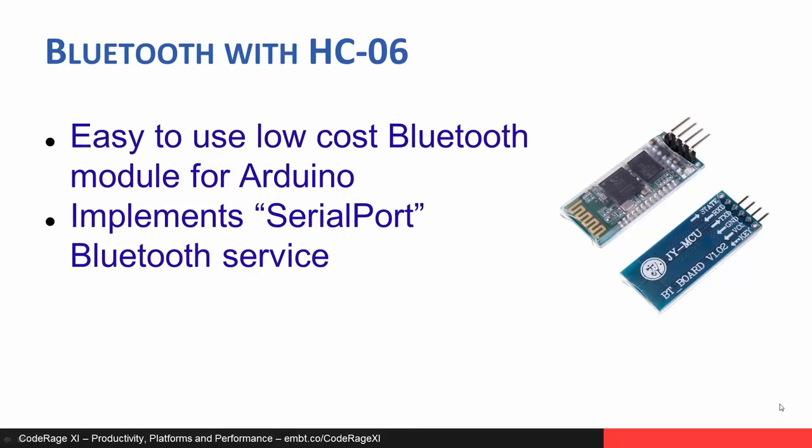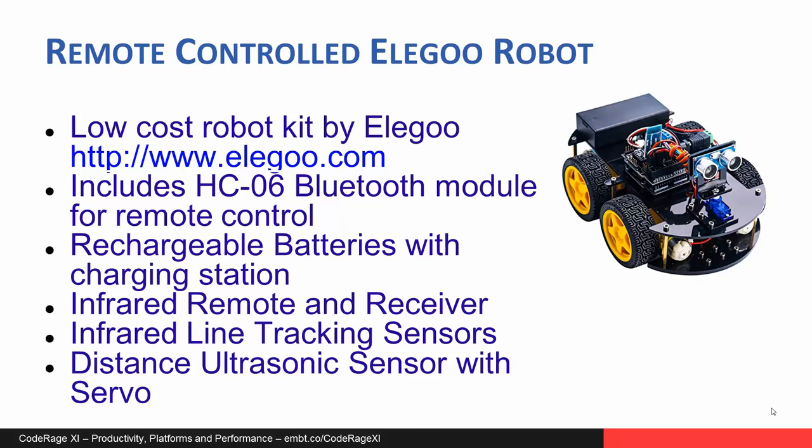We will use Bluetooth to remotely control a robot car. I have used the Elegoo robot car — a great low-cost kit. For its feature set, this is by far the most affordable robot kit I have seen. It includes an HC06 Bluetooth module for remote control, rechargeable batteries with charging station, infrared remote and receiver, infrared line tracking sensors, and an ultrasonic distance sensor mounted on a servo that allows it to be rotated and measure distances in different directions.